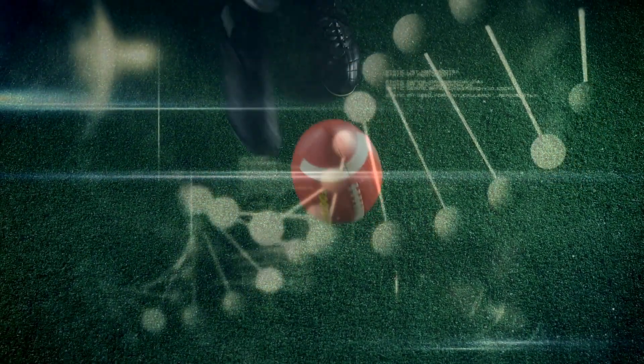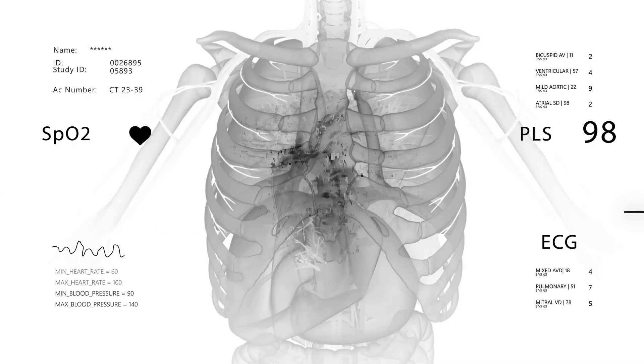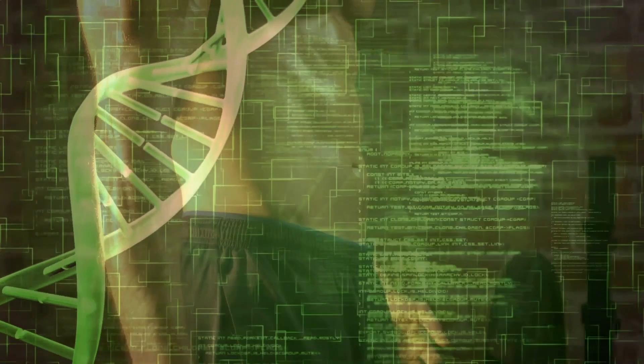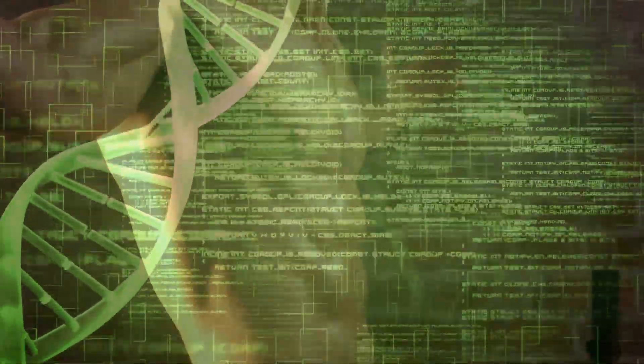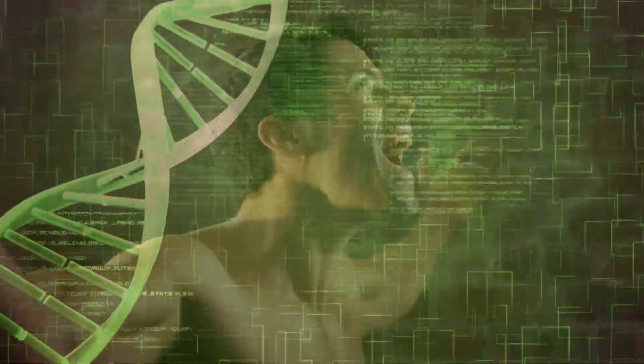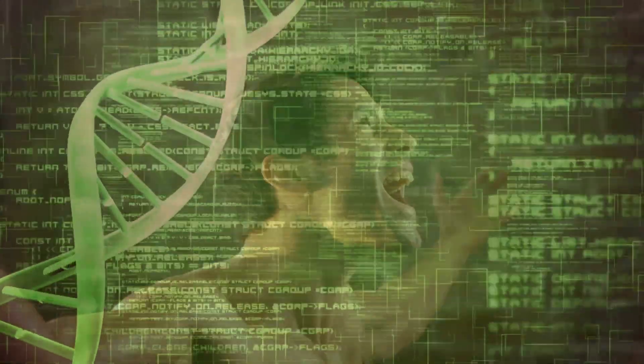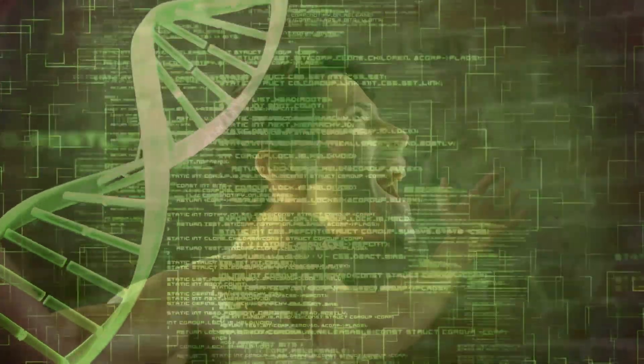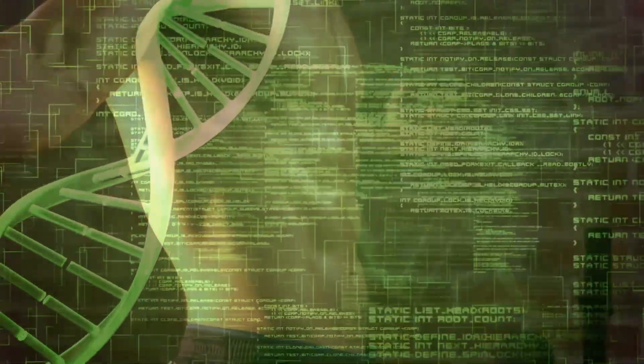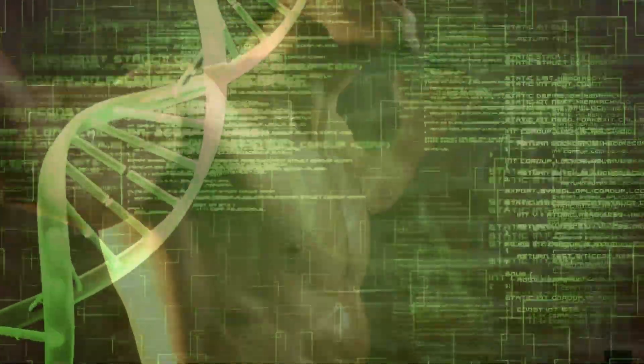This complex system of gene control is essential for health, but when it breaks down, the results can be devastating. We now know that errors in the epigenome are a major driver of many diseases. Cancer is the classic example. We think of cancer as a disease of genetic mutations, but it's also a disease of epigenetic chaos. Cancer cells can hijack the system for their own purposes. For example, they can slap a flood of off switches onto our tumor suppressor genes, the very genes designed to stop cells from dividing out of control.